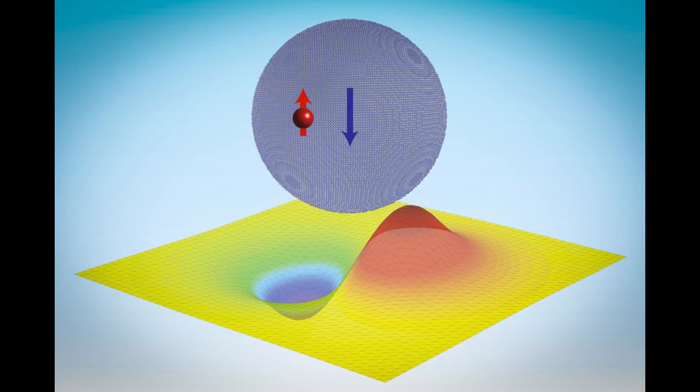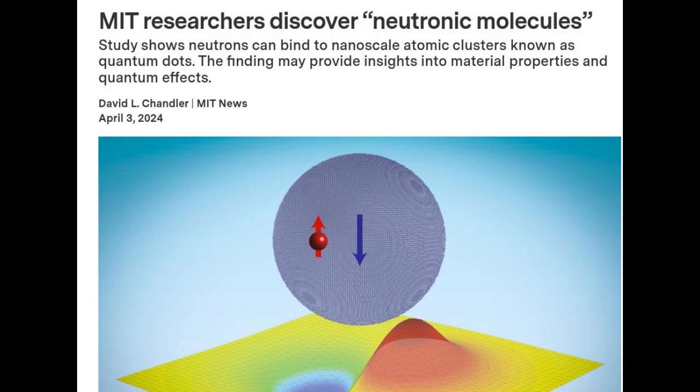But now, researchers at MIT have found that neutrons can actually be made to cling to particles called quantum dots, which are made up of tens of thousands of atomic nuclei held there just by the strong force.